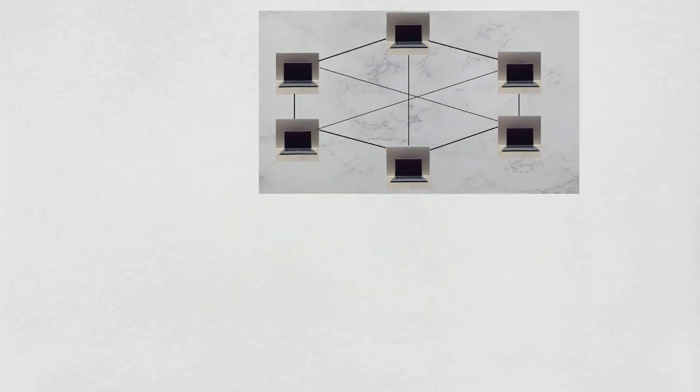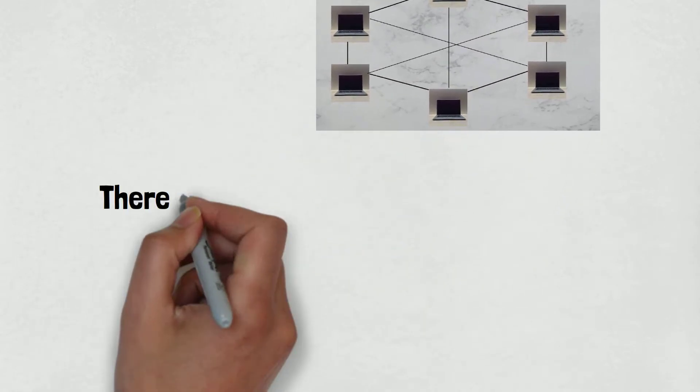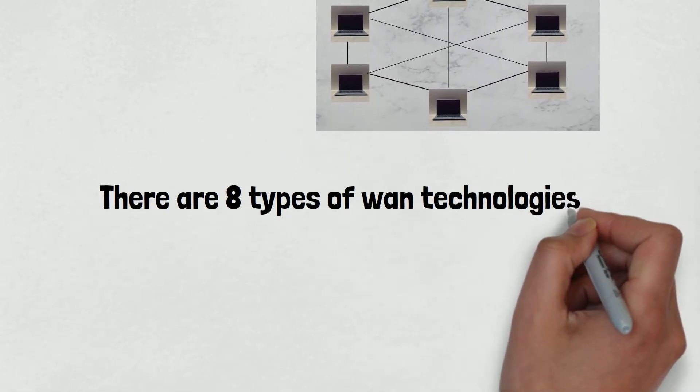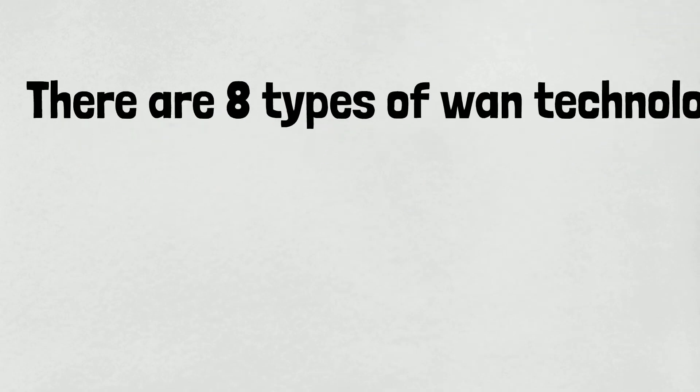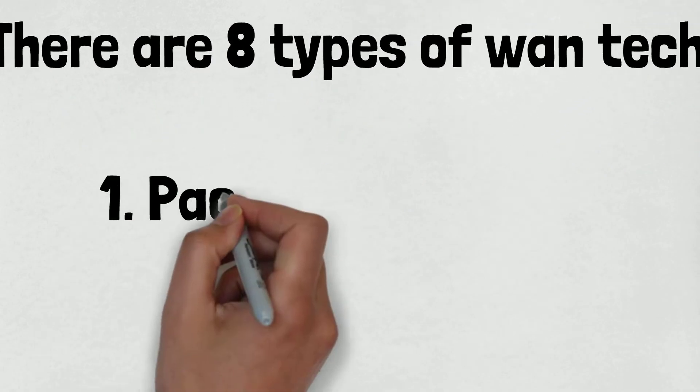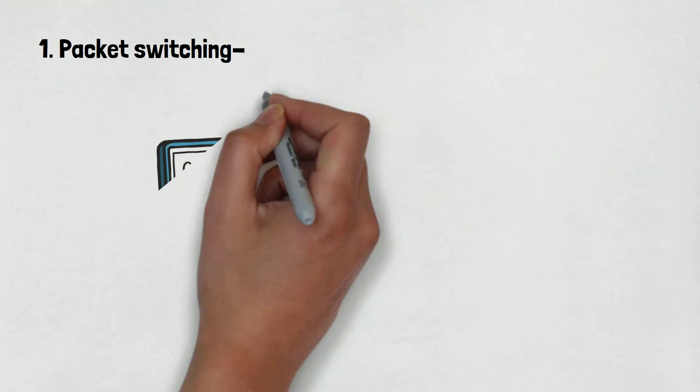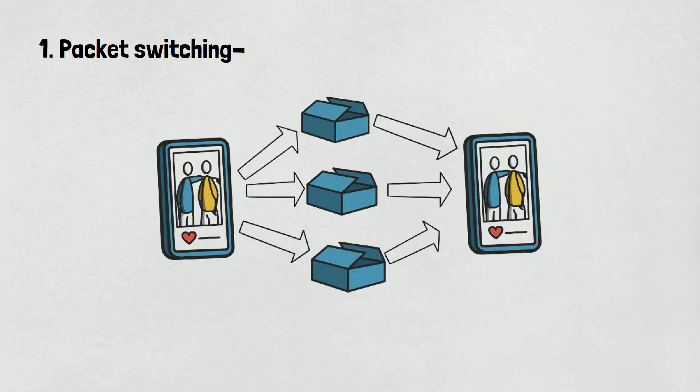Now, coming to the different types of WAN technologies, there are 8 types. Number 1 is Packet Switching. Packet switching is a method of data transmission in which a message is broken into several parts, called packets, that are sent independently over whatever route is optimum for each packet, and reassembled at the destination.